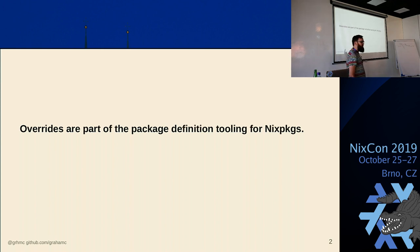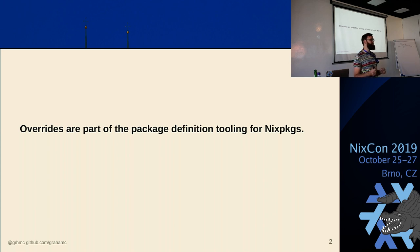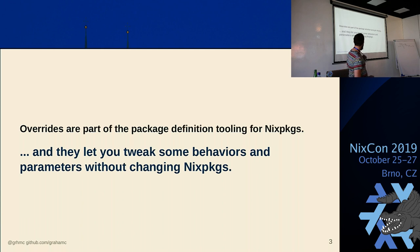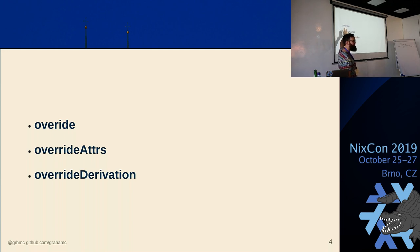Overrides are part of Nixpkgs. Nix itself doesn't really know about overrides. Overrides are an invention of Nixpkgs to let you change package definitions without actually editing Nixpkgs. This lets you solve most things — if you don't like how something is packaged, most things can be solved with overrides. There are three different varieties. One — which is misspelled on the slide — override. This is override with two R's.